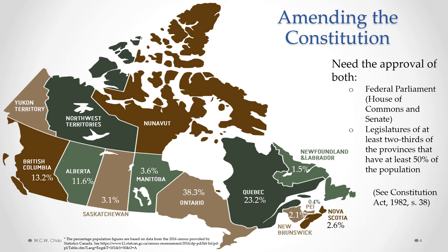If we ever want to change or amend the constitution, there are specific rules called the amending formula. The amending formula requires that any amendment needs to be approved by both the federal parliament — made up of the House of Commons and the Senate — and the second requirement is the approval of the legislatures of at least two-thirds of the provinces that have at least 50 percent of the population of Canada.